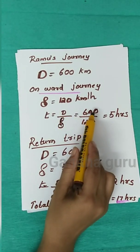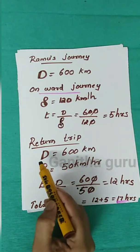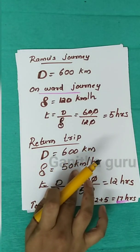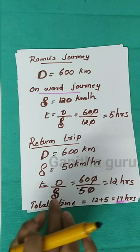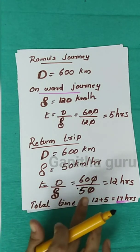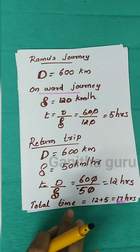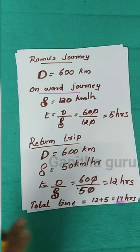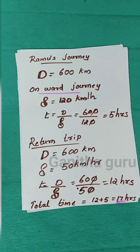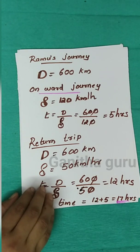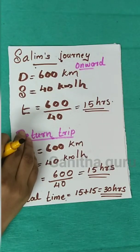For Rammu: onward trip 600 by 120 equals 5 hours; return trip 600 by 50 equals 12 hours; total time is 17 hours. For Sali at 60 km per hour both ways, total time would be lower than 17 hours.